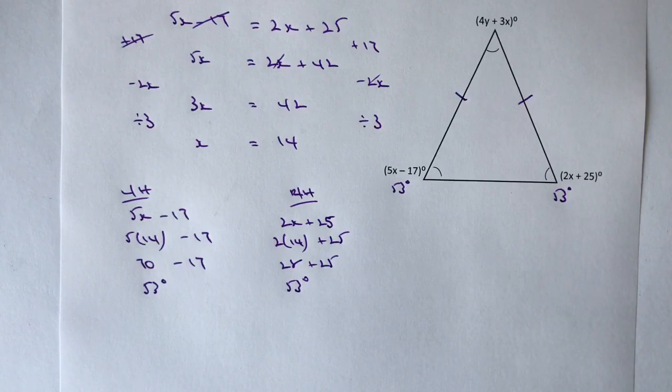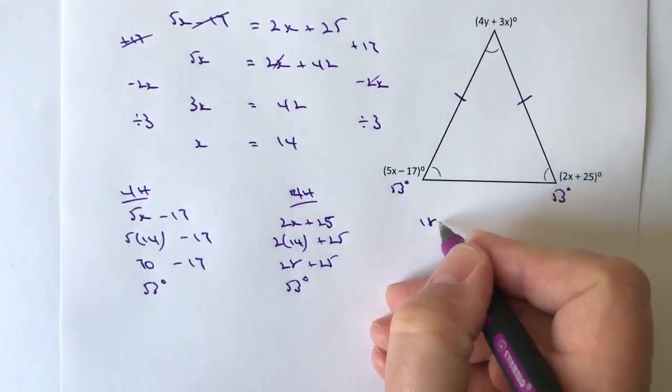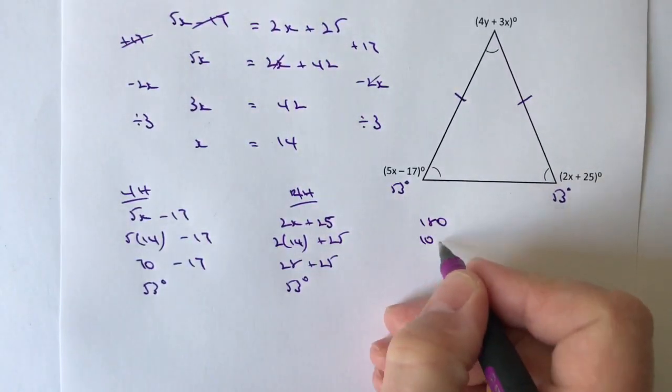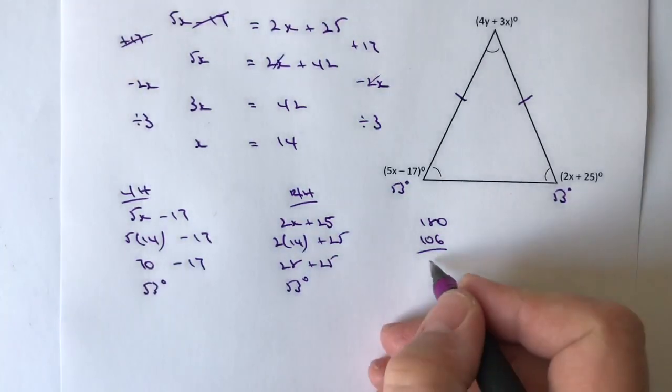If I add those two angles together and take them away from 180, I'm going to get the value of the top angle. So 180 minus 106 is going to give me 74 degrees.